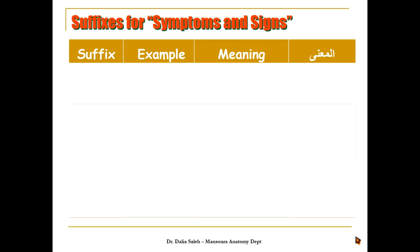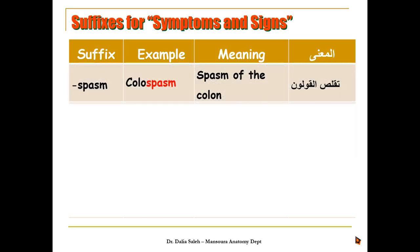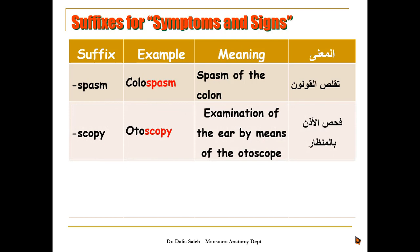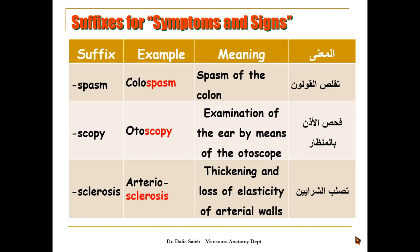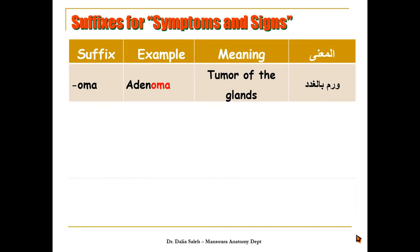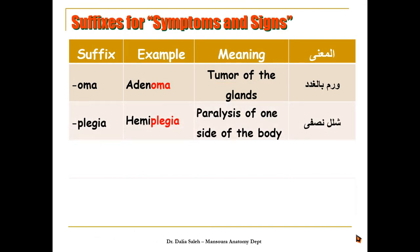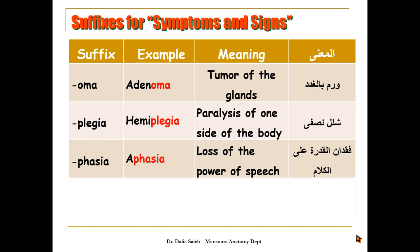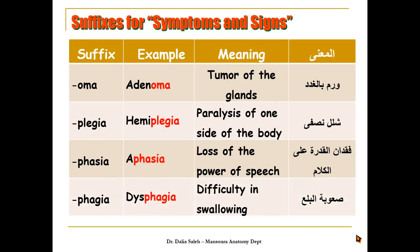Suffixes for symptoms and signs: '-spasm,' as in 'colospasm.' '-scopy,' as in 'otoscopy,' or examination of the ear by means of the otoscope. '-sclerosis,' as in 'arteriosclerosis,' or thickening and loss of elasticity of the arterial walls. '-oma,' as in 'adenoma,' or tumor of the glands. '-plegia,' as in 'hemiplegia,' or paralysis of one side of the body. '-phasia,' as in 'aphasia,' or loss of power to speak. '-phagia,' as in 'dysphagia,' or difficulty in swallowing.